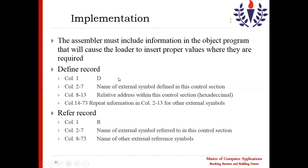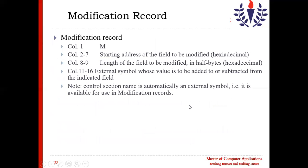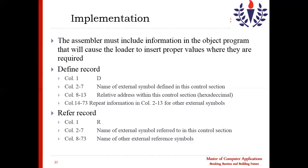The define record format includes: column 1 for the record type code, columns 2–7 for the name of the external symbol defined in this control section, columns 8–13 for the relative address within this control section. These are the simple addresses that belong only to this control section.